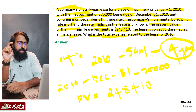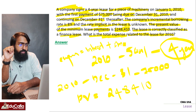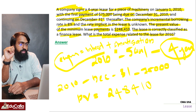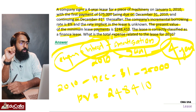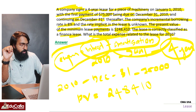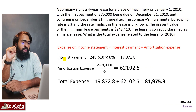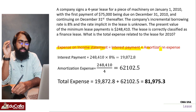The expense is the interest payment plus the amortization payment. Total expense equals interest payment plus amortization expense. That is the method: interest payment plus amortization expense.